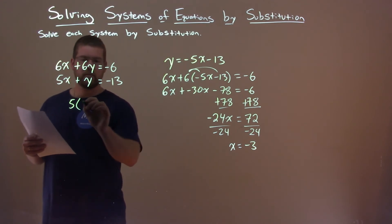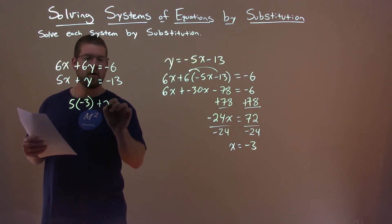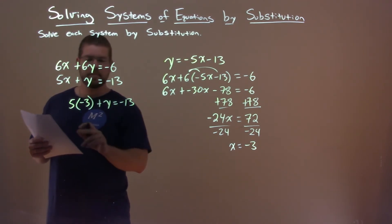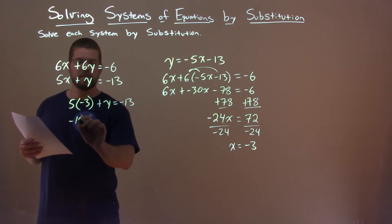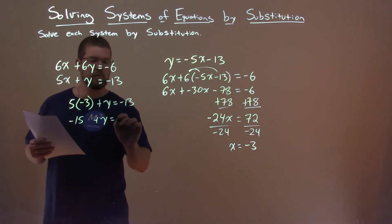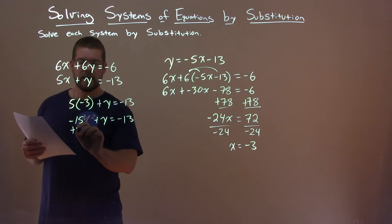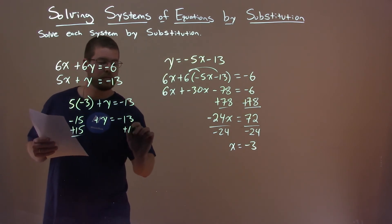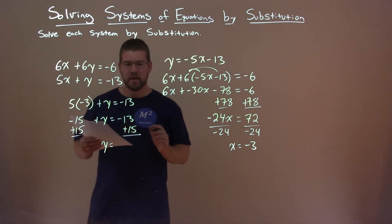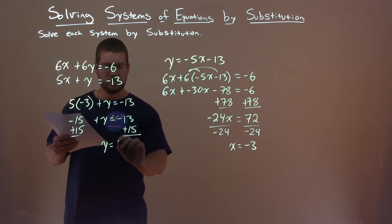5 times negative 3 instead of x plus y equals negative 13. 5 times negative 3 is negative 15, plus y equals negative 13. Add 15 to both sides, y is by itself, and negative 13 plus 15 is positive 2.